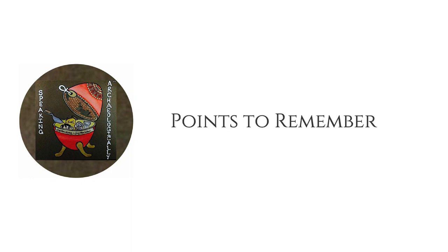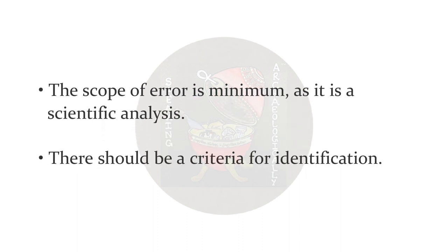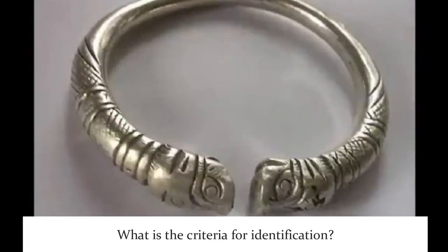Now that we've discussed all the approaches to object analysis, here are the key points to remember — without these, you will make grave errors in your analysis. Number one: always make note of your criteria of identification of an object. Why do you say a particular thing is what it is? For instance, if you're looking at a jewelry object and say it's a bangle or wrist ornament, what is your criteria for that identification? Does the provenance say that? Do you agree with what the museum catalog or descriptive detail on the display says, or is it your own deduction?